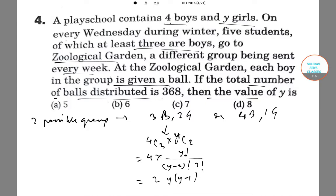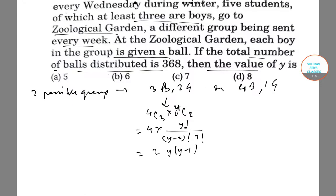So the total number of balls received by this group is 3 into 2y into (y minus 1), that is 6y(y minus 1). The total balls received by this group is 6y(y minus 1).